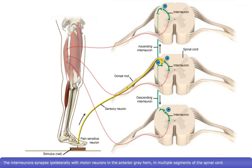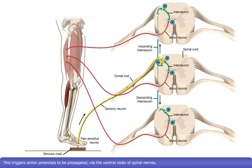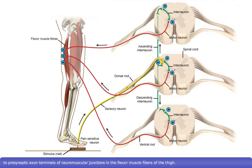The interneurons synapse ipsilaterally with motor neurons in the anterior gray horn in multiple segments of the spinal cord. This triggers action potentials to be propagated via the ventral roots of spinal nerves to presynaptic axon terminals of neuromuscular junctions in the flexor muscle fibers of the thigh. Several nerves are required to stimulate all the muscle groups needed to move the whole limb away.